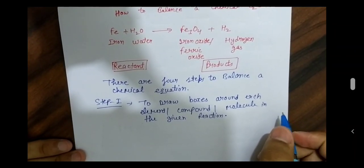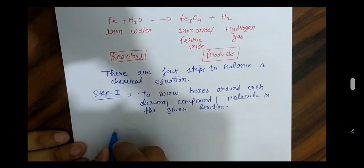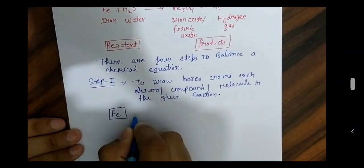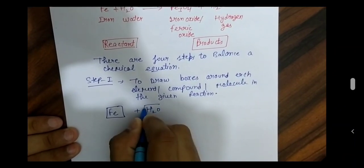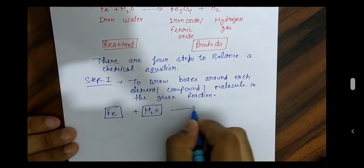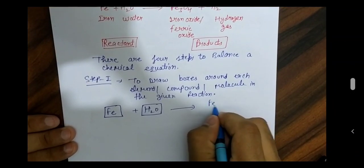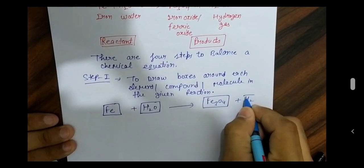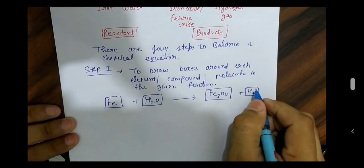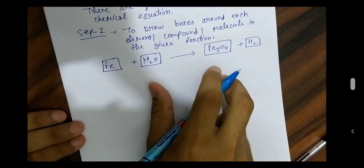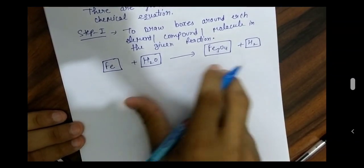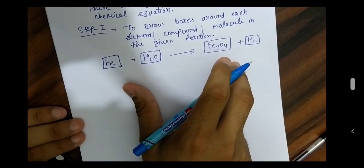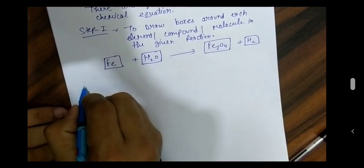We draw boxes around each element: Iron, Water, Iron Oxide, and Hydrogen gas. So in Step 1, we draw boxes around each element, compound, and molecule.